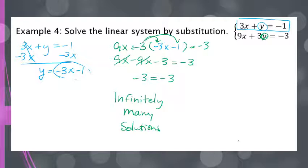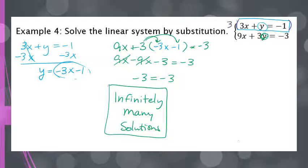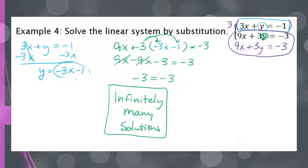If you solve and come out with two equal numbers, your final answer is infinitely many solutions. Also, notice that if you take the top equation and multiply everything by 3, you get 9x plus 3y equals negative 3 — the exact same as the bottom equation. So if you notice that one equation is a multiple of the other, that's a tip that you're going to get infinitely many solutions.